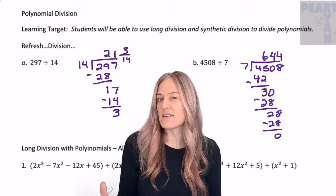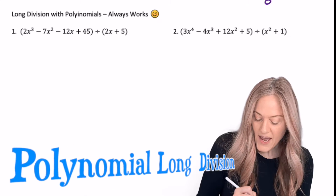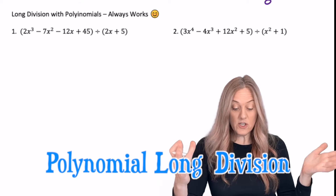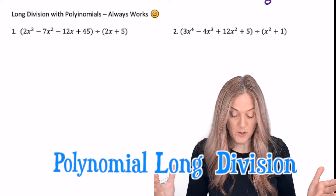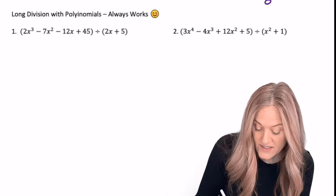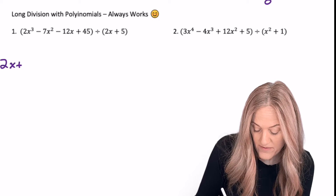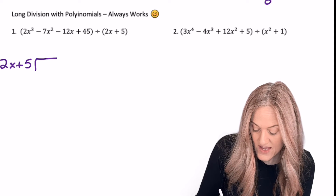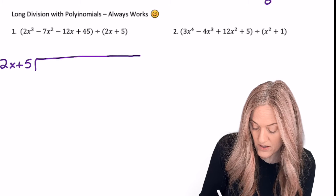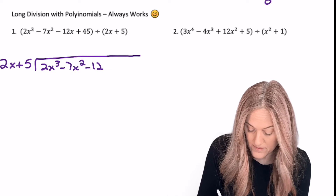Next, let's apply this to long division with polynomials. We have the 2x cubed polynomial being divided by 2x plus 5. We still set it up the same — 2x plus 5 goes outside, and then we put that big polynomial inside the box.